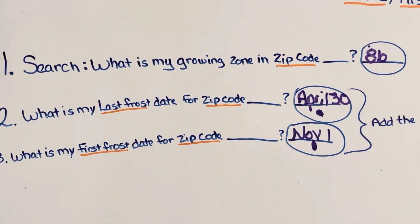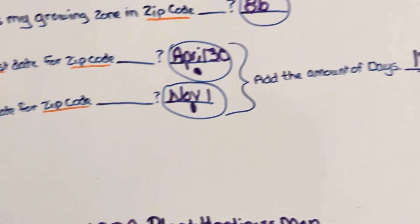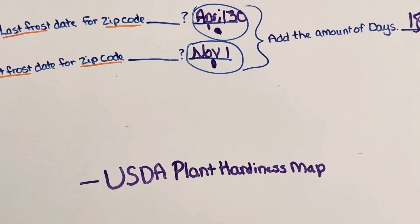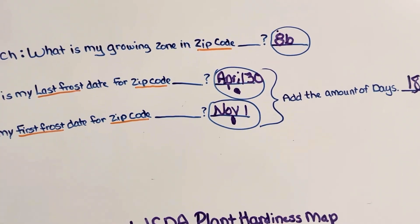So there's an idea of what that looks like. You can also go to the USDA plant hardiness map that can help you as well navigate this information.